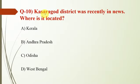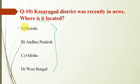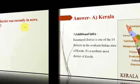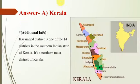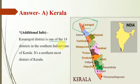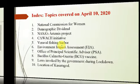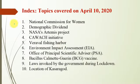Question number 10: Kasaragod district was recently in the news — where is it located? The correct answer is Kerala. As seen on the map, it is a district in Kerala and is one of the 14 districts in the state. That's all for today's MCQs.